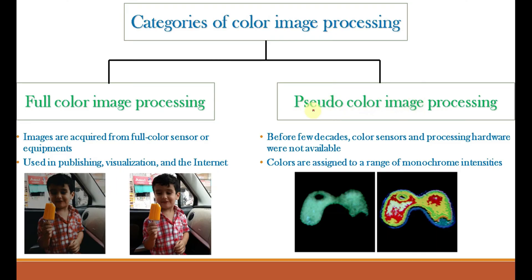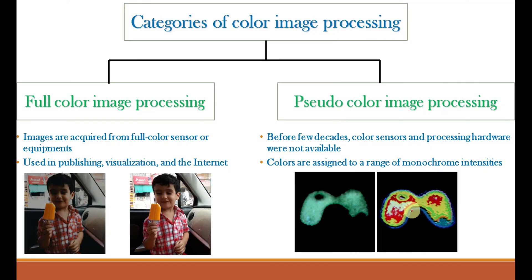For pseudo color image processing, 'pseudo' means false, so this means false color image processing. The images acquired for pseudo color processing are grayscale images only, and we assign false color levels or color values to the grayscale image. Before a few decades, color scanners and processing hardware were not available and images captured were black and white. Later, for analysis, colors were assigned to a range of monochrome intensities to produce an image easier for diagnosis purposes.